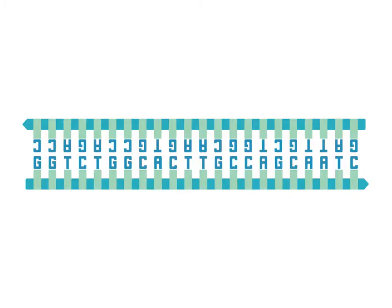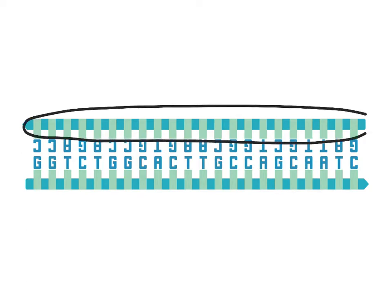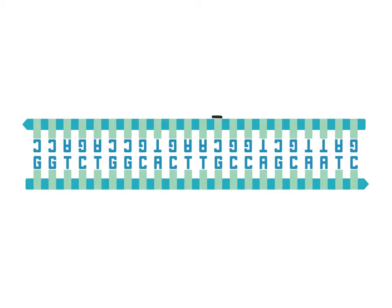DNA is represented in the same manner throughout this PRL. The dark teal line combined with the light green boxes represents the sugar phosphate backbone. Specifically, the light green boxes represent the sugar molecules. The 3' end is represented by the arrowhead, while the 5' end is represented by the arrowtail. The letters represent the bases. The double helix is ignored for the sake of simplicity.